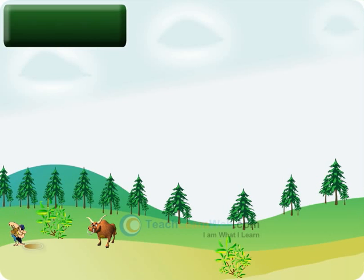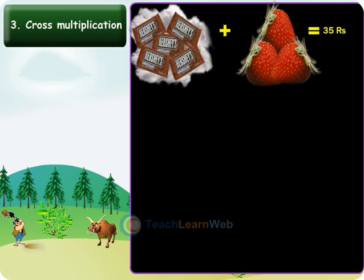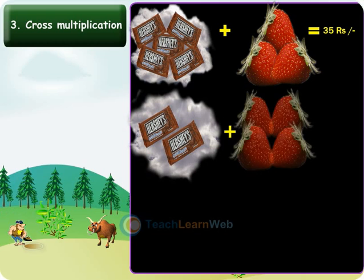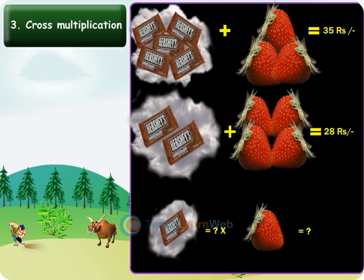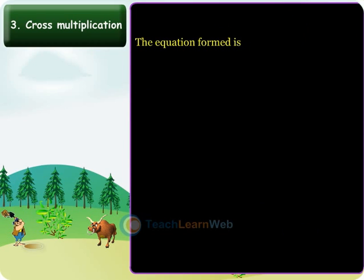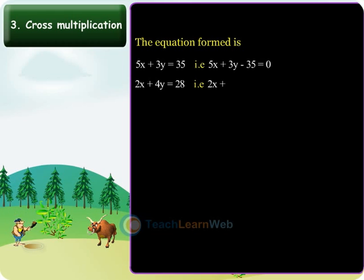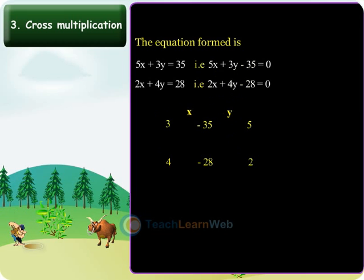Now, children, let us learn the cross multiplication method with the help of an illustration. The cost of 5 chocolates and 3 strawberries is Rs. 35, and the cost of 2 chocolates and 4 strawberries is Rs. 28. Find the cost of a chocolate and a strawberry. Let the cost of a chocolate be Rs. x and that of a strawberry be Rs. y. The equations formed are 5x plus 3y minus 35 equals 0 and 2x plus 4y minus 28 equals 0. In the cross multiplication method, write the y coefficients, then the constant values, then x coefficients and again y coefficients, and cross multiply them as shown.